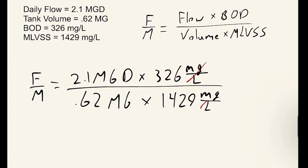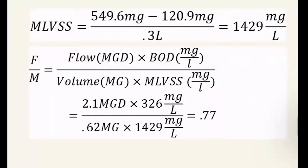First we cancel our units: milligrams per liter cancels at the top and bottom, and million gallons cancels as well. When we calculate this, we get 0.77. If you remember from the beginning of the lesson, a conventional plant has an F-to-M ratio of between 0.25 and 0.5. So 0.77 is much greater than 0.5, which tells us there is too much food going into the aeration basin and not enough microorganisms. In this case, it may be beneficial to waste less solids in the secondary clarifiers and retain more solids in the activated sludge basins in order to properly remove all the BOD.